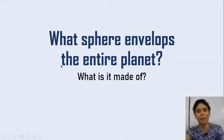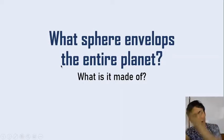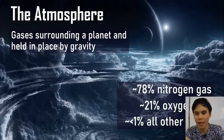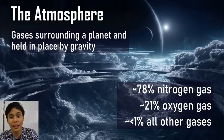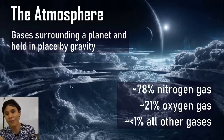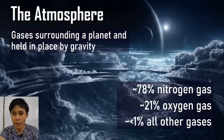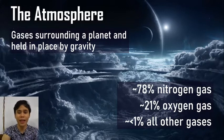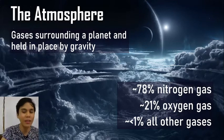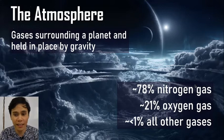So what sphere envelops the entire planet? The entire planet is covered in a layer of gases, so it's the atmosphere. The atmosphere is basically the gases that surround the planet and is held in place by its gravity. Our atmosphere on Earth is made up mostly of nitrogen gas — 78% nitrogen gas, 21% oxygen, and then less than 1% of all the other gases.